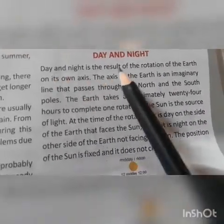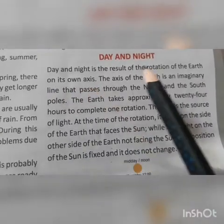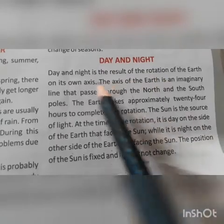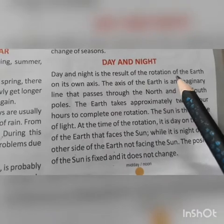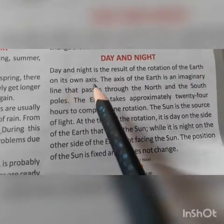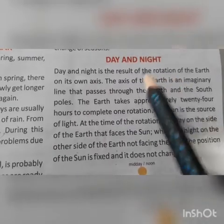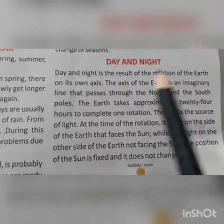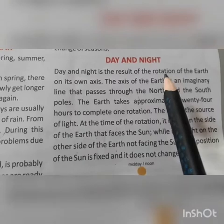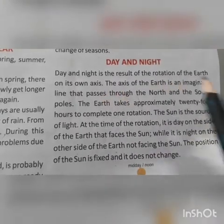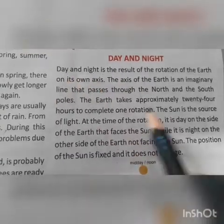Day and night is the result of the rotation of the earth on its axis. What causes day and night? It is the result of the rotation of the earth on its axis. Rotation means the movement of the earth on its own axis. Due to the rotation of the earth, we have day and night.